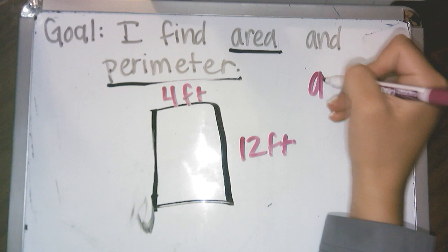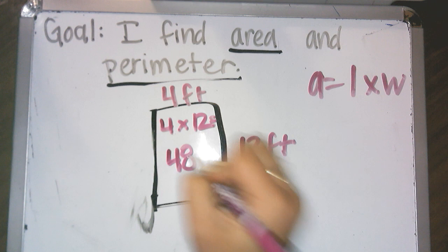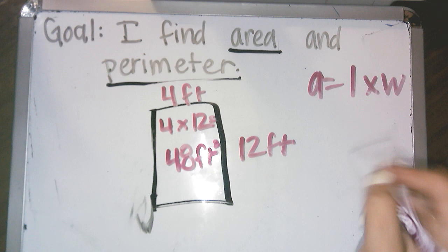So to find the area, again, area is going to be length times width. So top times side. So I'm going to do 4 times 12. And 4 times 12 is 48. And my units are feet. So I would put feet.